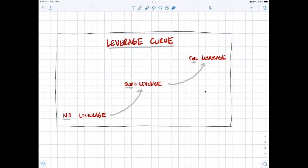So on the far left-hand side, we have a situation where we have no leverage. On the far right-hand side, we have a situation where we have full leverage. What does that mean?